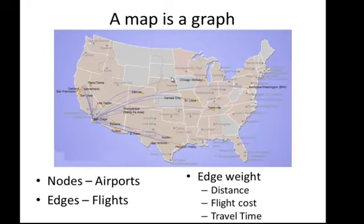We can also have what's called a weighted graph. Here you can imagine these flights have a distance or a flight cost or travel time associated with them. We can have additional information about each edge, which is called generically a weight.